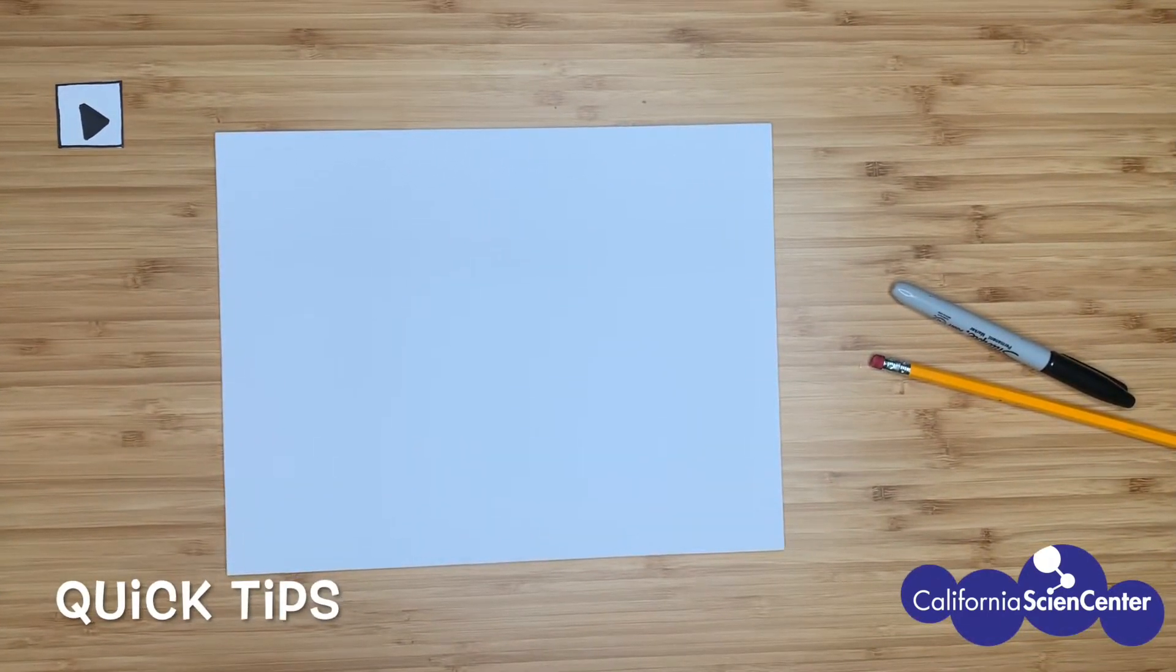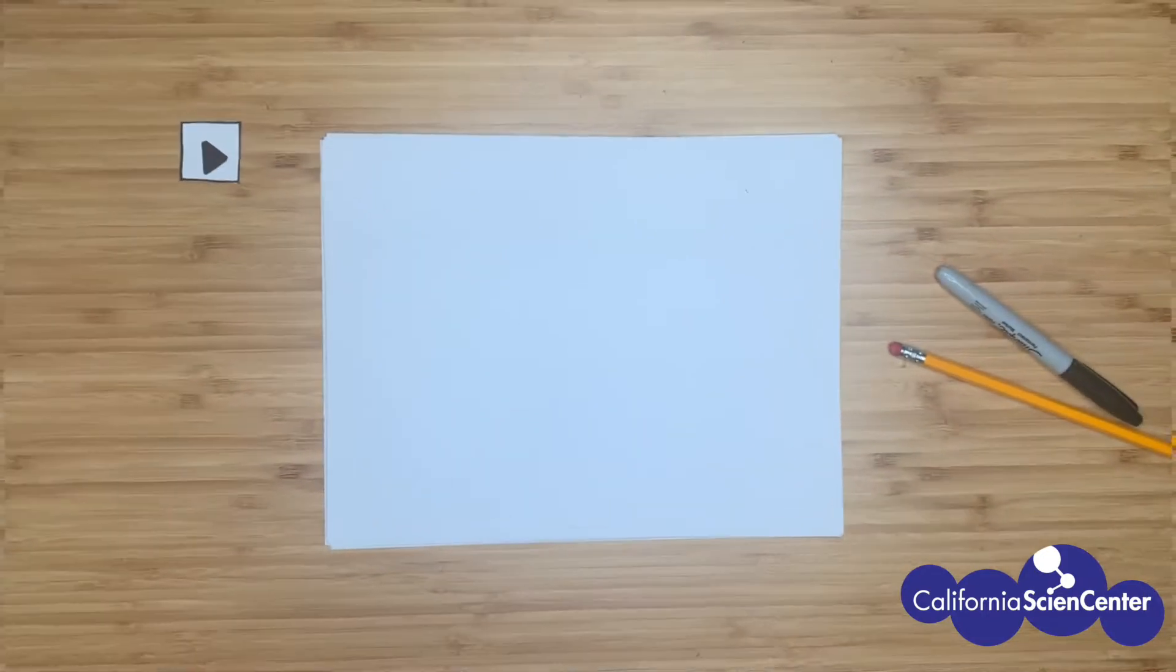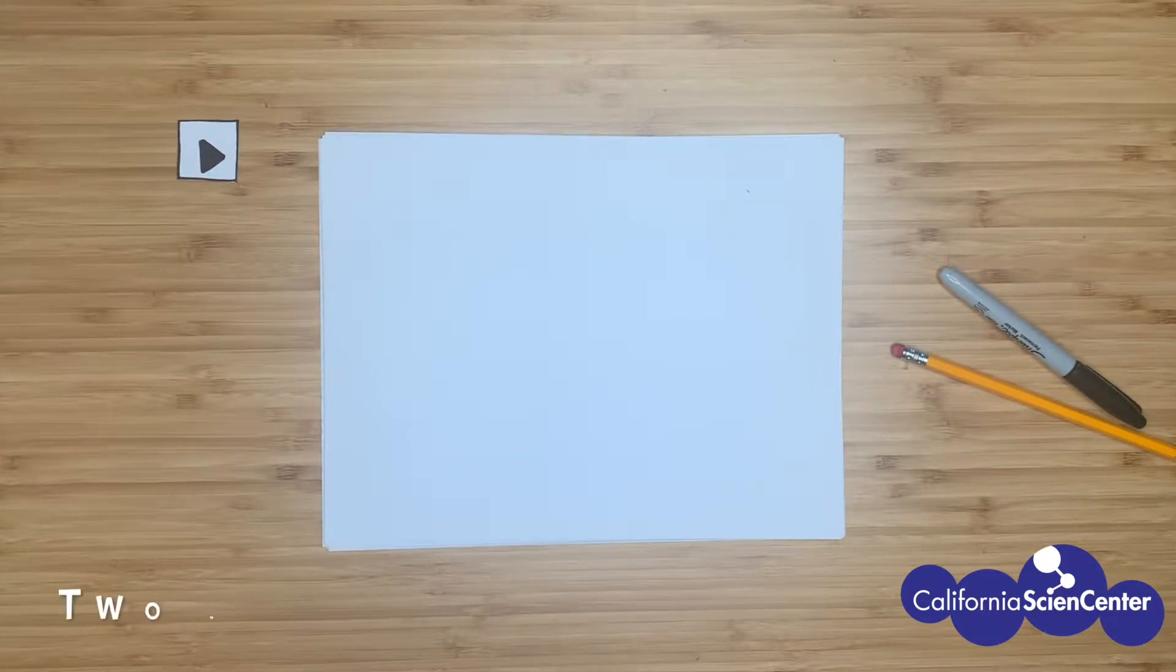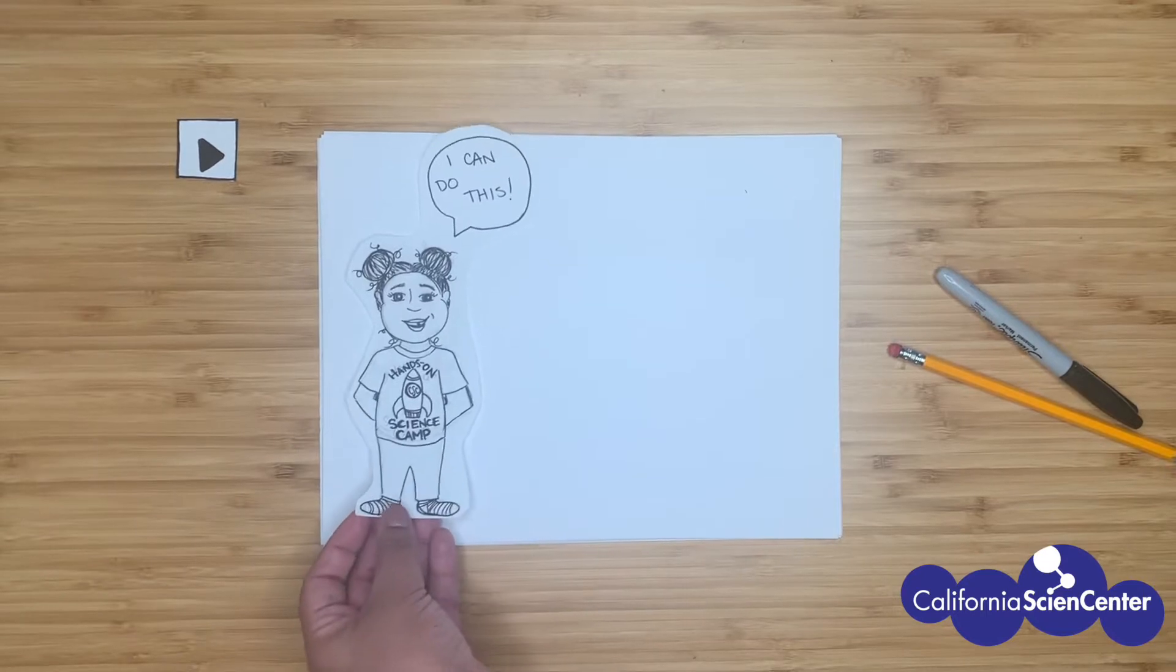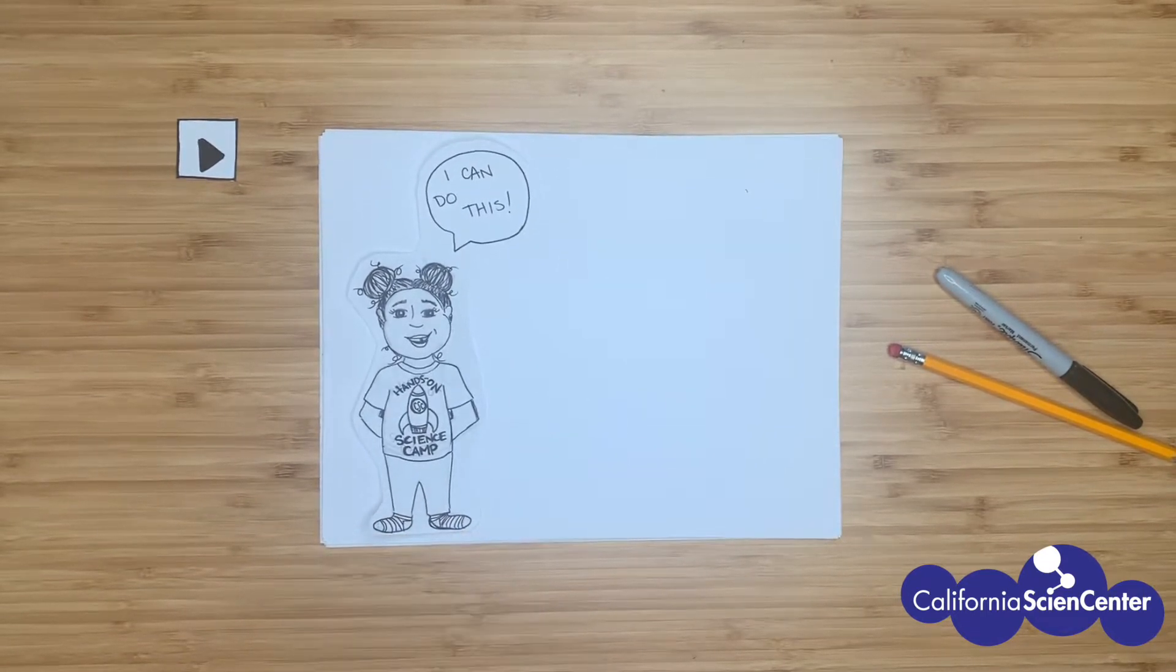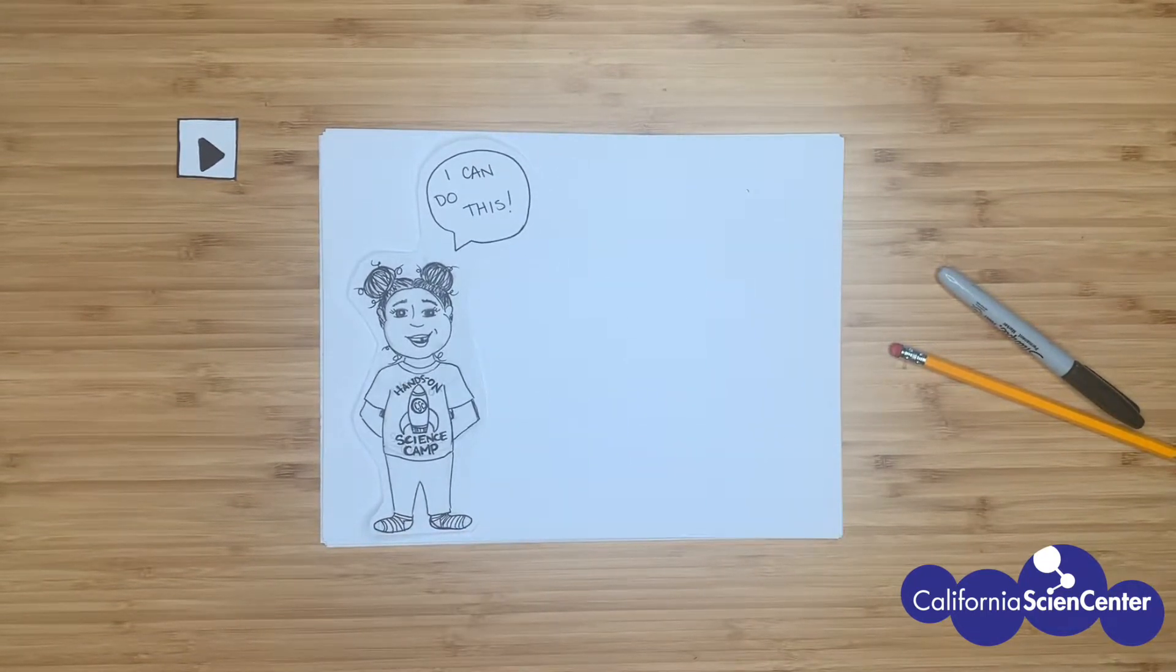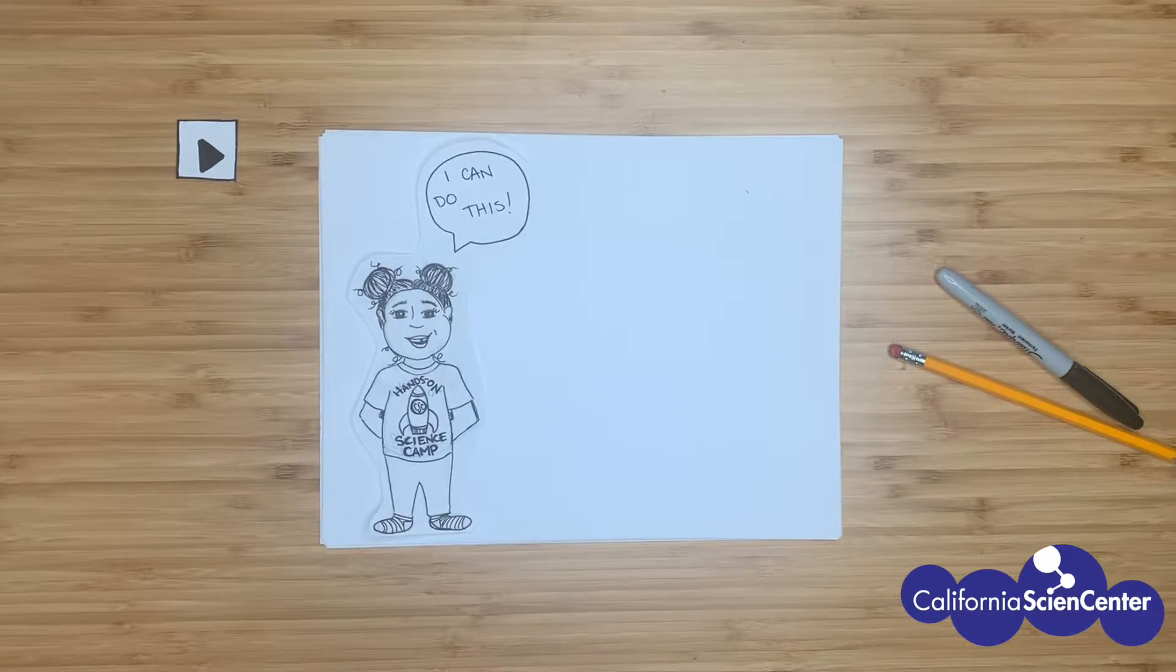Here are some quick tips before getting started. Okay scientists, there are two ways you can do this video. Your first option is to do it on your own. If you're feeling pretty confident with your drawing skills, you can watch this video and draw and make your own coloring page.